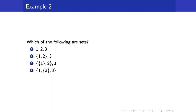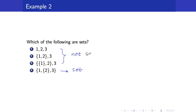Let us consider the following example: which of the following are sets? A set has to be enclosed by braces. So the answer is the fourth option — the set containing the element 1, and the set containing 2 and 3. The other options are not sets because they are not enclosed by braces.